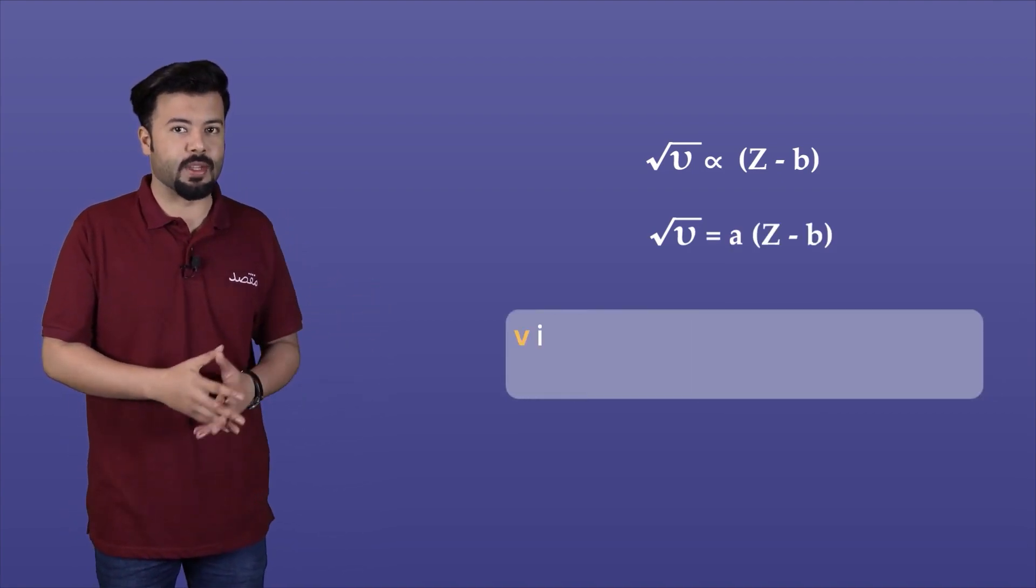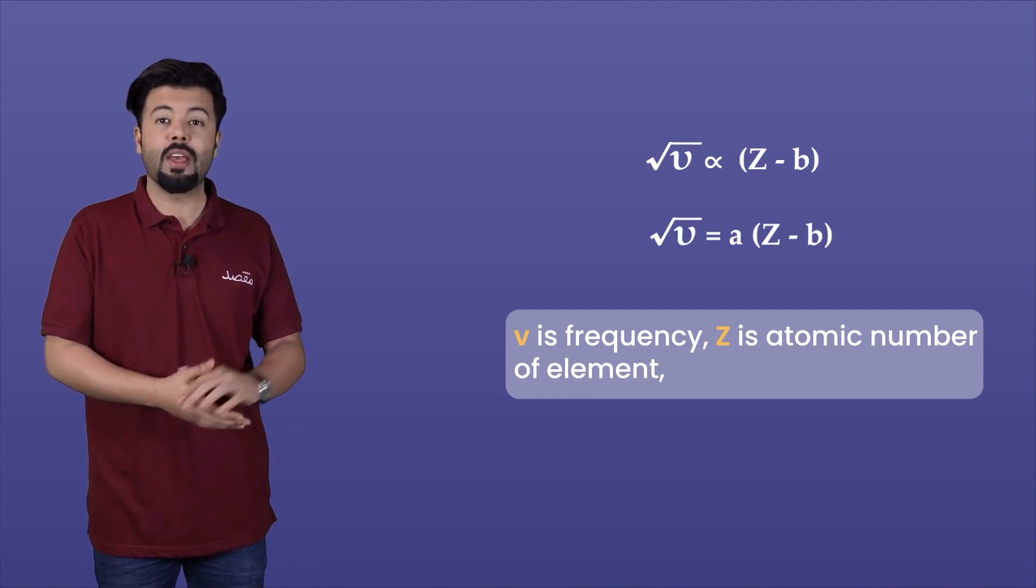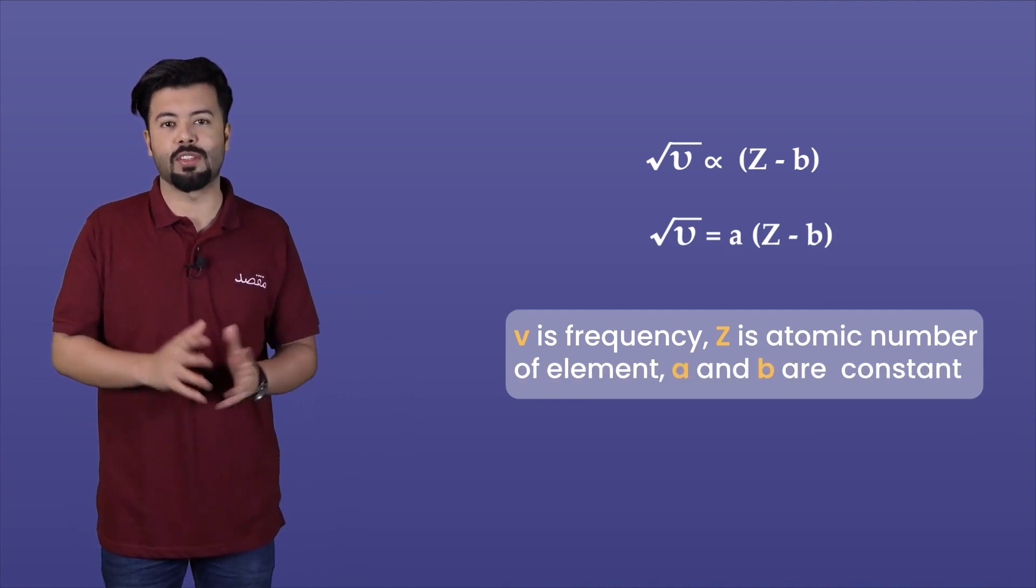Here, v is frequency, z is atomic number of the element, where a and b are constants.